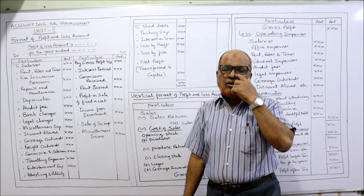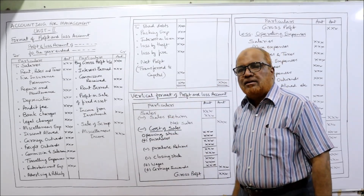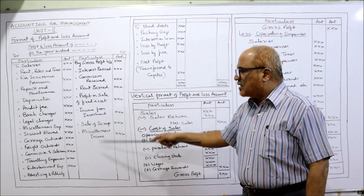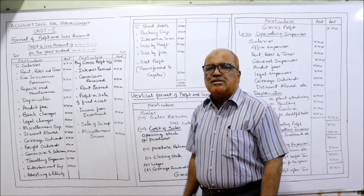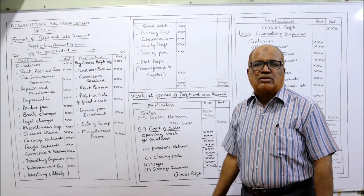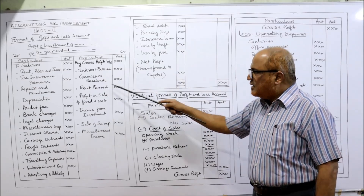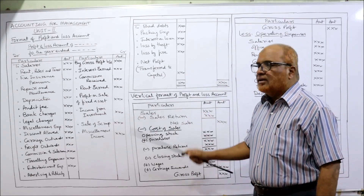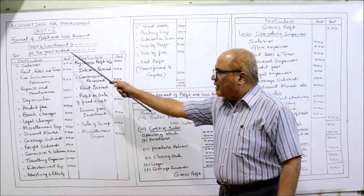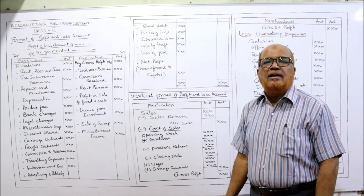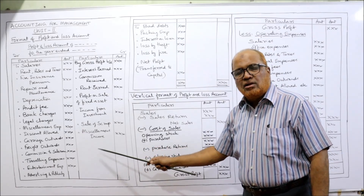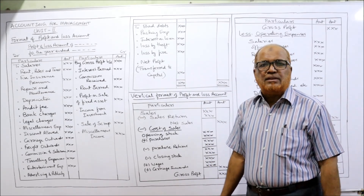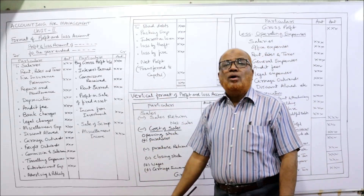After taking all items on the debit and credit sides, find the total of each side. Suppose the credit side totals 10 lakhs and the debit side totals 8 lakhs — the debit side is short, so we write net profit of 2 lakhs as the balancing figure on the debit side, transferred to capital. If the debit side is more and the credit side is less, we get a net loss, which is taken on the credit side and transferred to capital in the balance sheet.